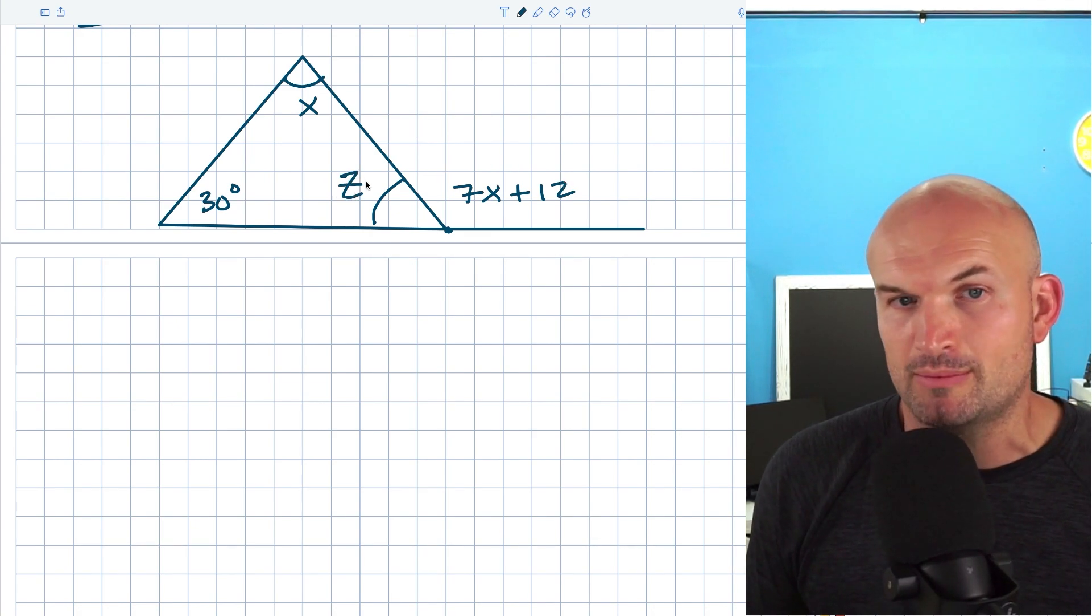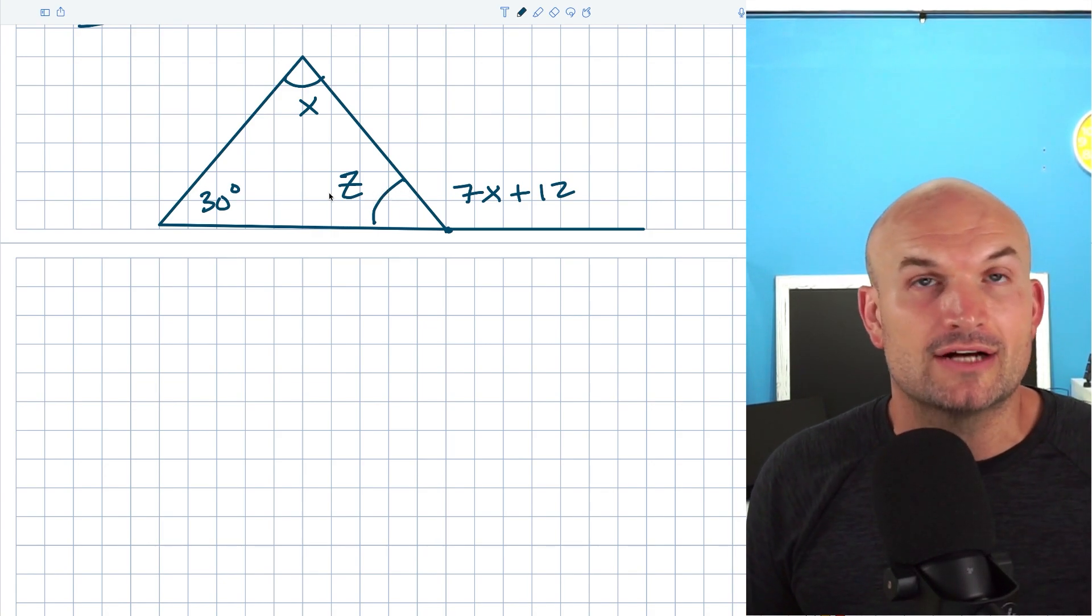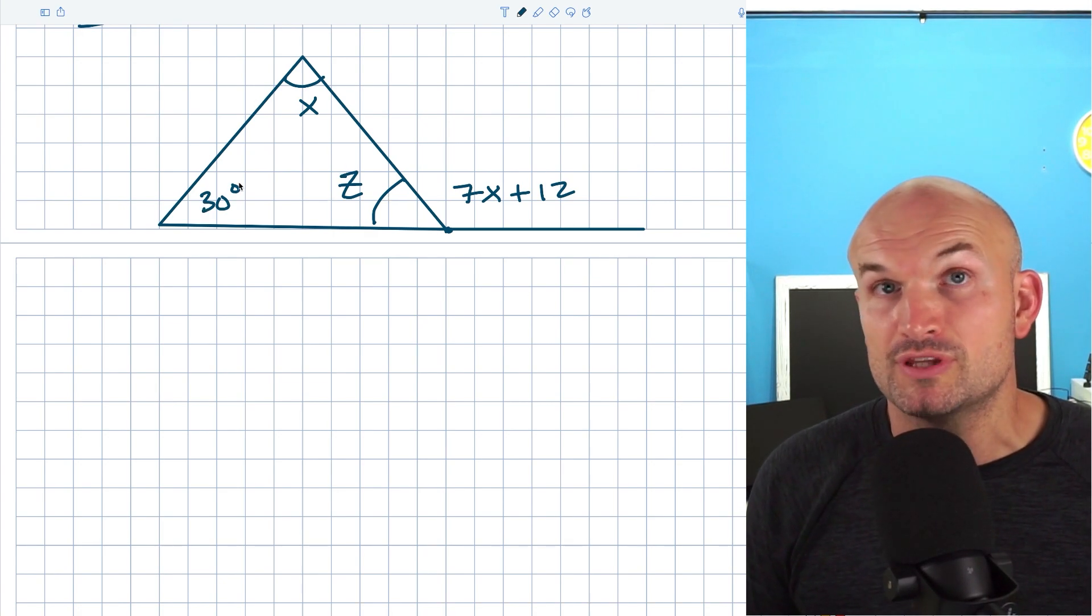I'm going to create another variable and say, let's pretend this angle is Z. Let's use the information that we do know, that all the angles in a triangle add up to 180 degrees to write the relationship for this triangle.